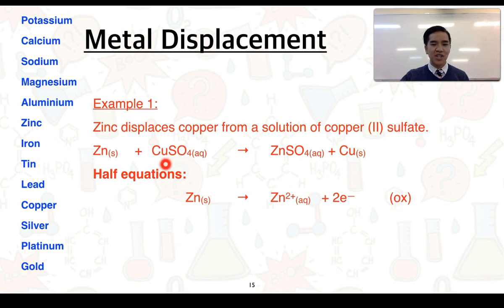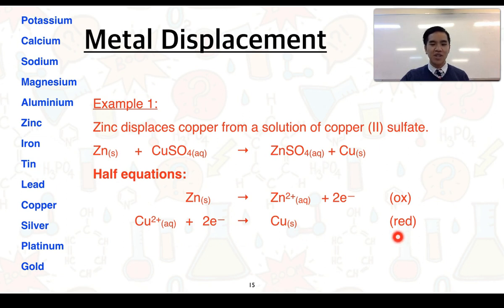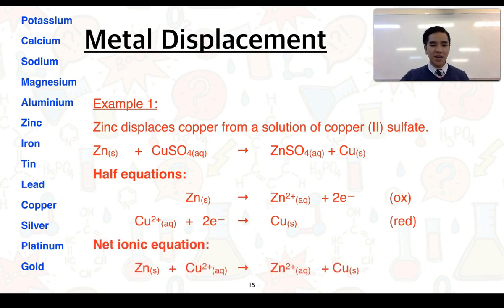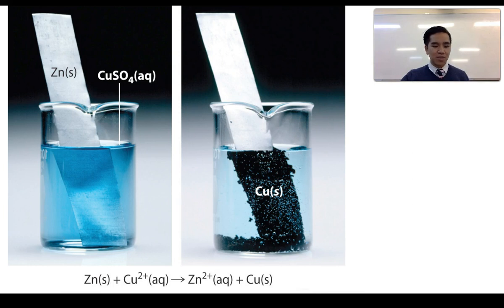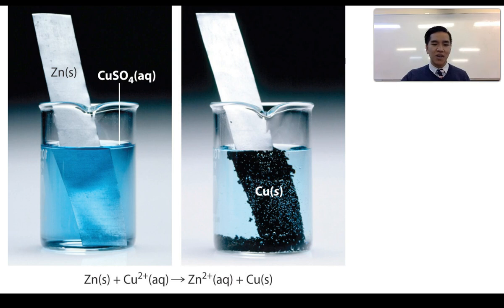Copper ions in solution form copper metal by gaining electrons: Cu²⁺ gains two electrons to form copper metal — this is a reduction reaction. Zinc has lost two electrons and copper ions have gained two electrons, so we can sum these half equations to get the net ionic equation: Zn + Cu²⁺ → Zn²⁺ + Cu. Placing zinc metal in copper sulphate solution, we can see the formation of a solid copper deposit and the blue copper sulphate solution becoming less blue, eventually becoming colourless as zinc ions go into solution.